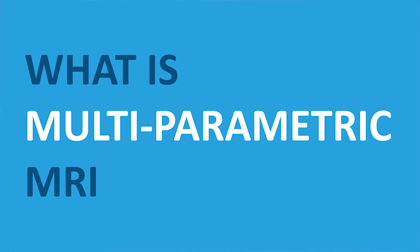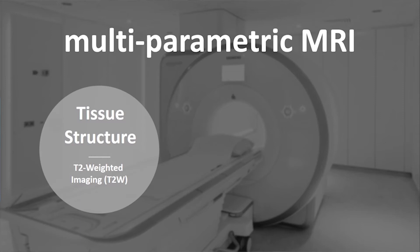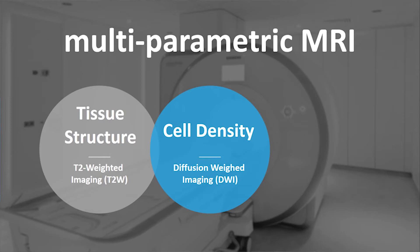What is multi-parametric MRI? Multi-parametric MRI consists of three imaging modalities. First, anatomical tissue structure — T2. Second, cell density — diffusion-weighted imaging. And third, vascularity — that means dynamic contrast enhancement.